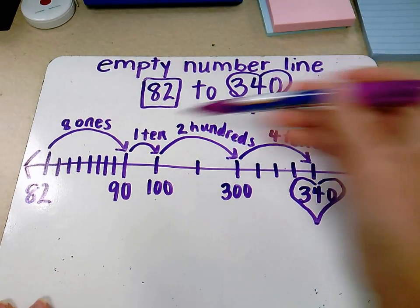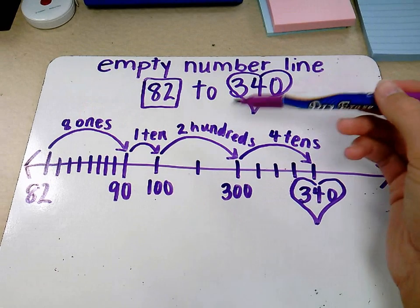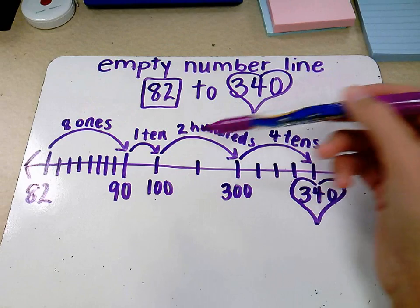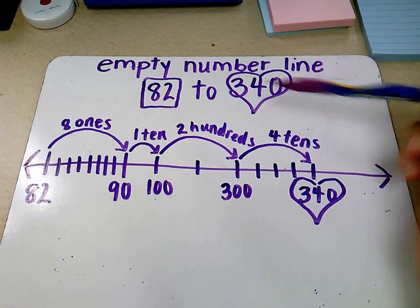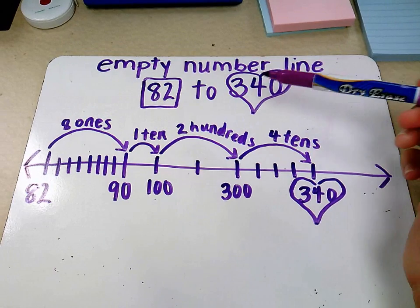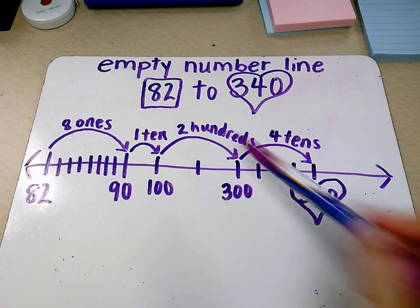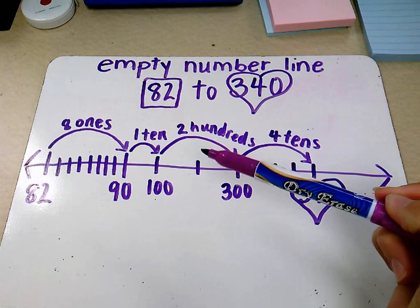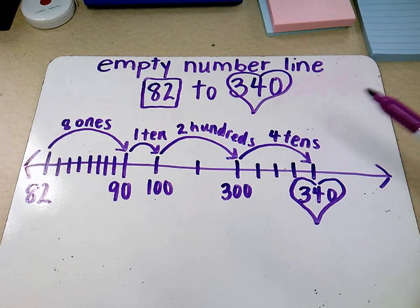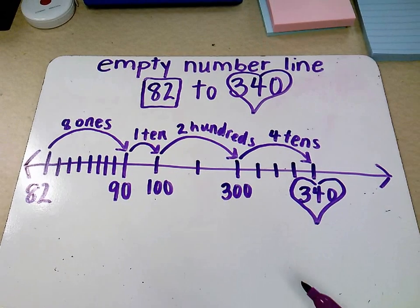It's so important that the kids label what they're doing up here because soon we'll be using empty number lines to help us add and subtract. We want the kids to be able to look quickly and say, okay, how many tens did I use? I used one 10, four tens. I used five tens. How many ones did I use? Eight ones. How many hundreds did I use? Two hundreds. And they'll be able to see the difference between these two numbers.